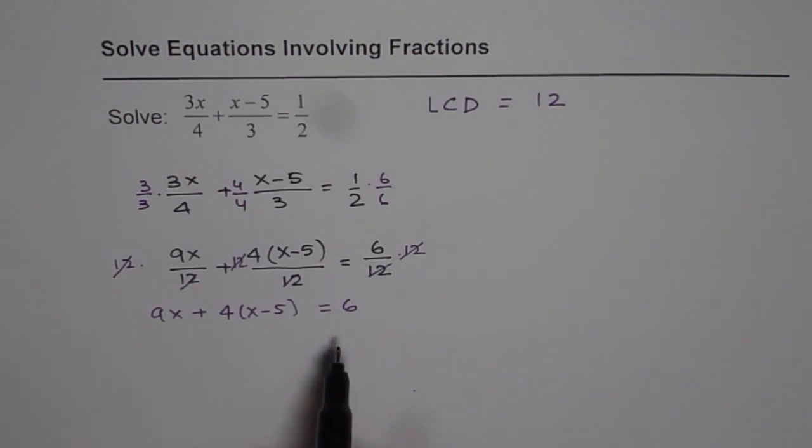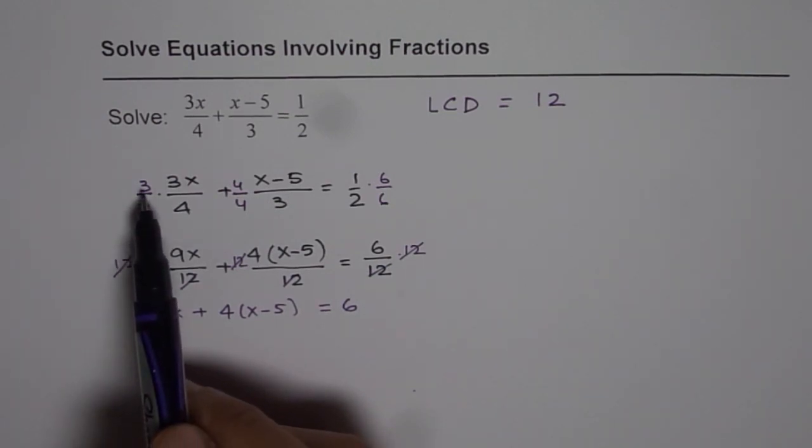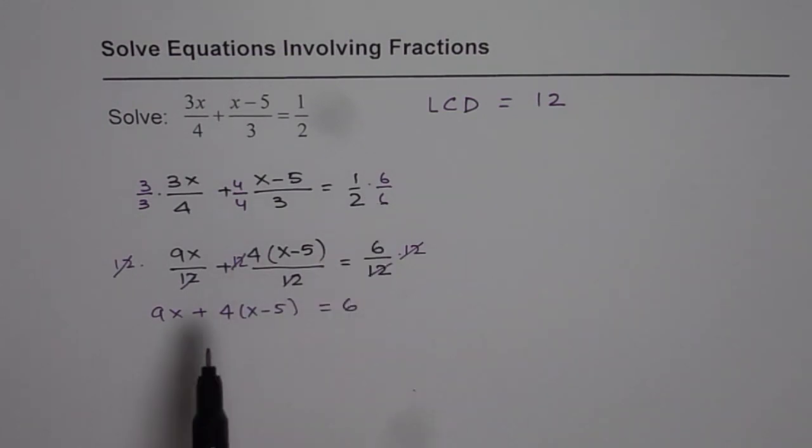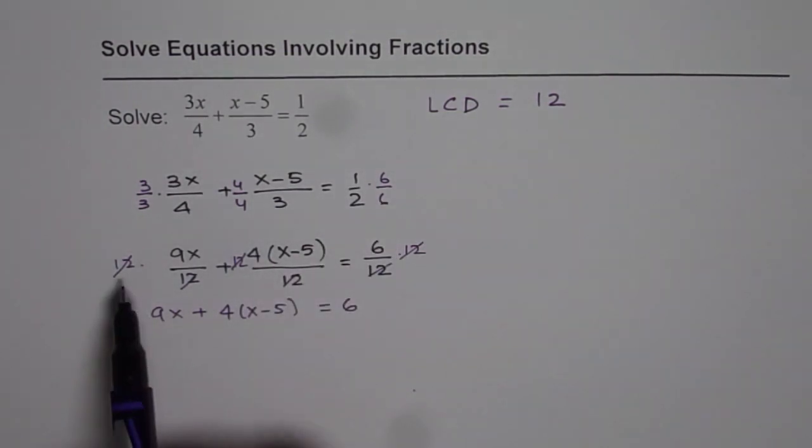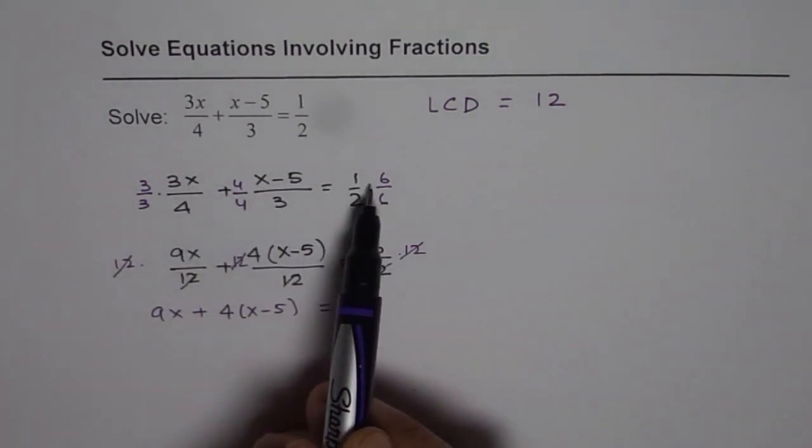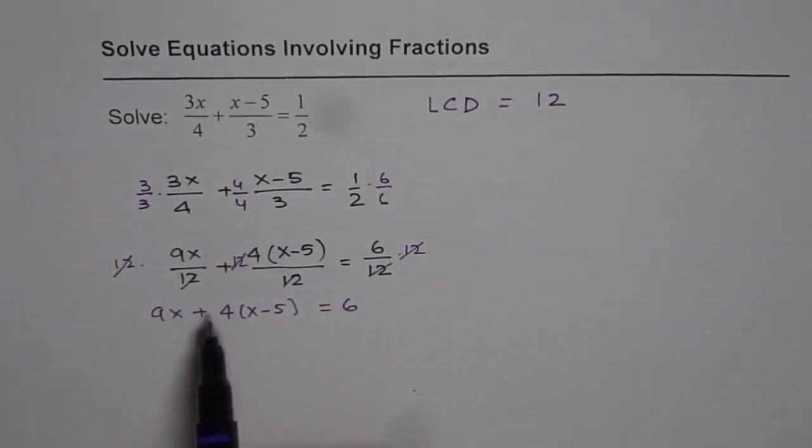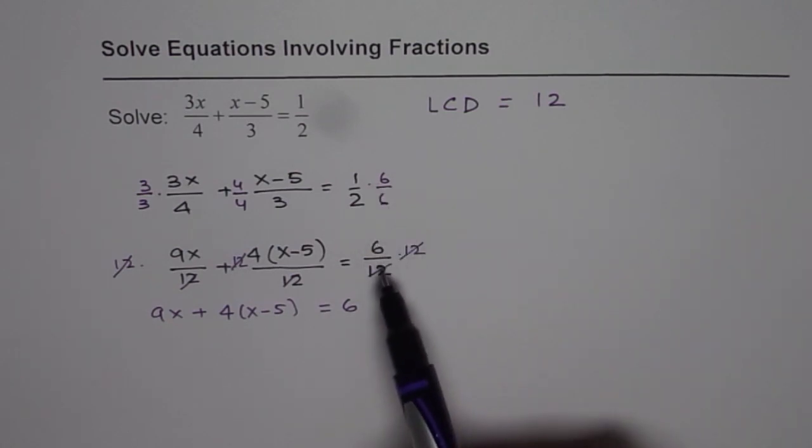Well there are a few shortcuts. I multiplied by 3 over 3, 4 over 4, and 6 over 6. Instead we could have multiplied this equation itself by 12 and got the same result. But my purpose of showing these steps is to make things very clear.